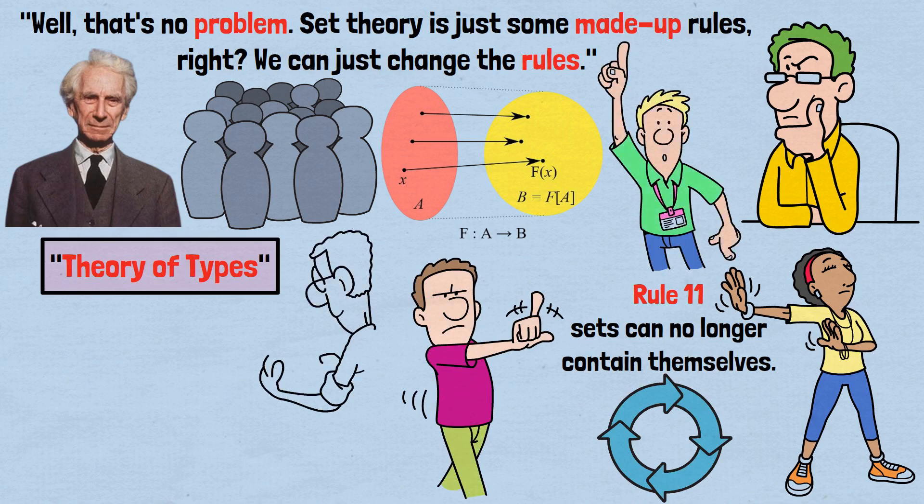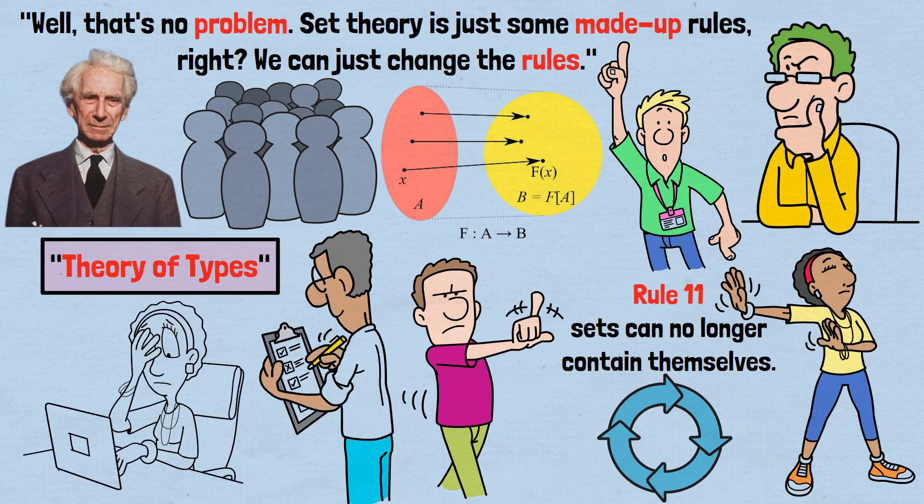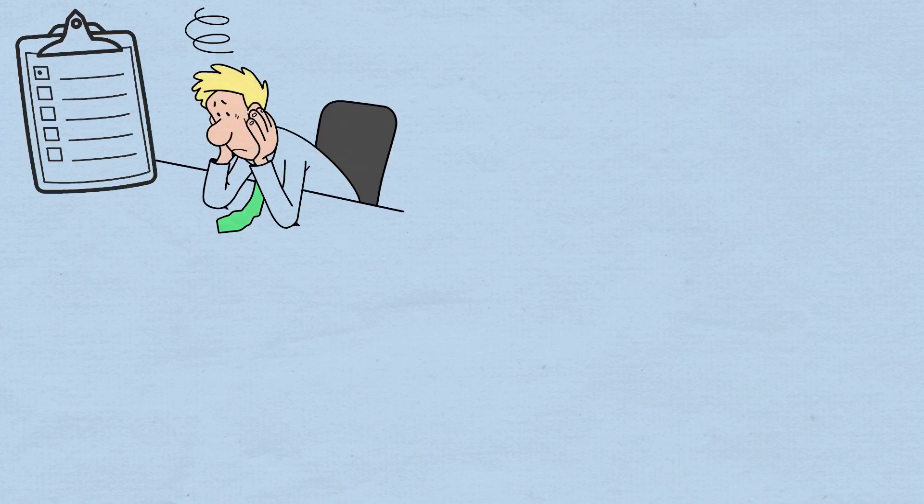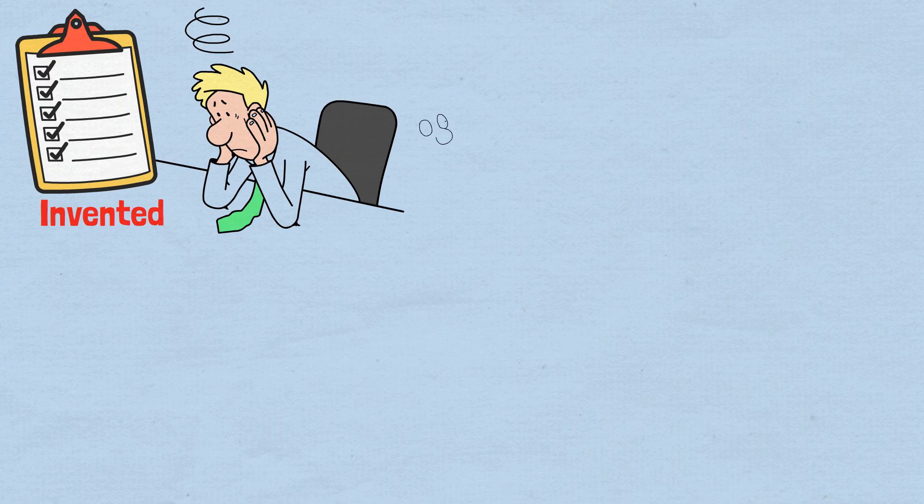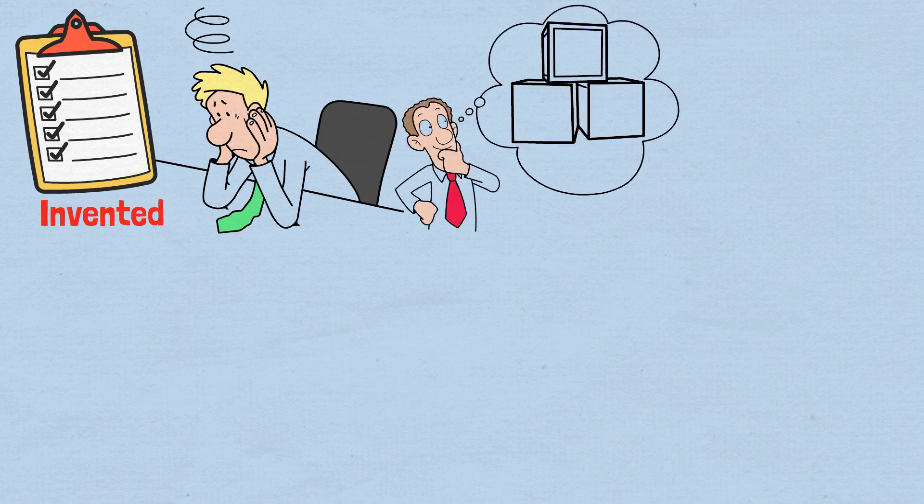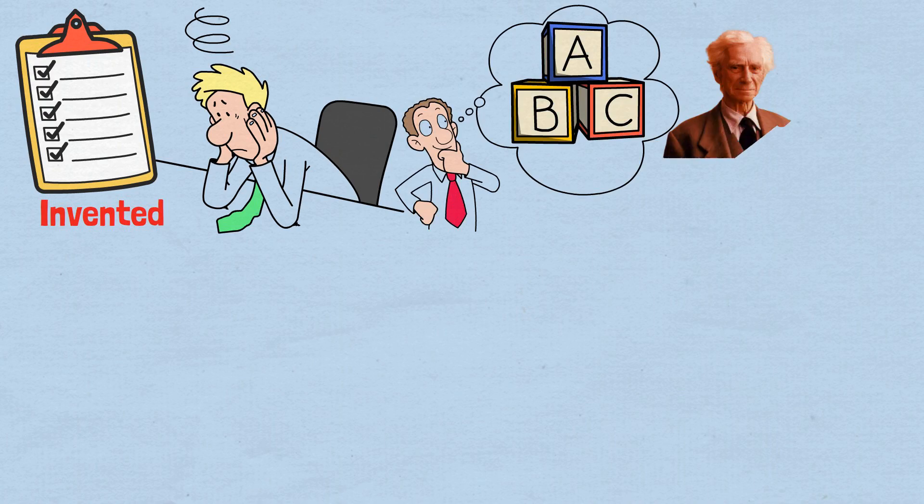But here's the crucial question. Were we just making up the rules of set theory all along? Can we simply change them when we discover a problem? The unsettling truth is that the rules of set theory aren't merely invented. They reflect how we naturally think about collections of things. And Russell's paradox has an analog in ordinary language that's equally troubling.